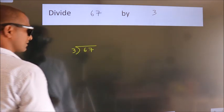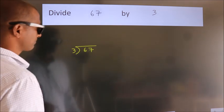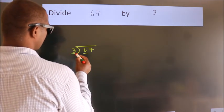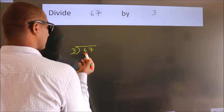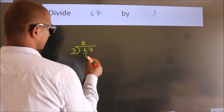This is your step 1. Next, here we have 6, here 3. When do we get 6? In 3 table, 3 2s, 6.